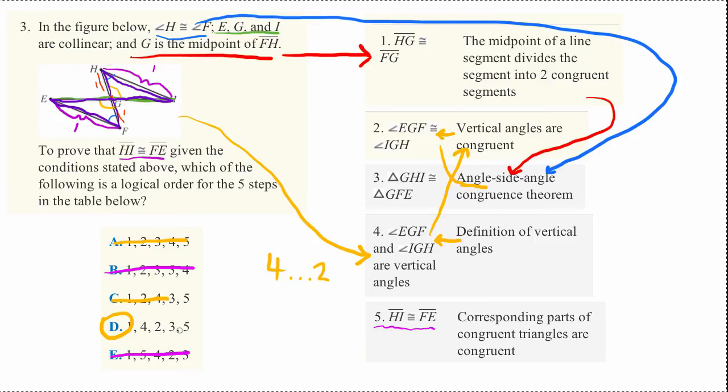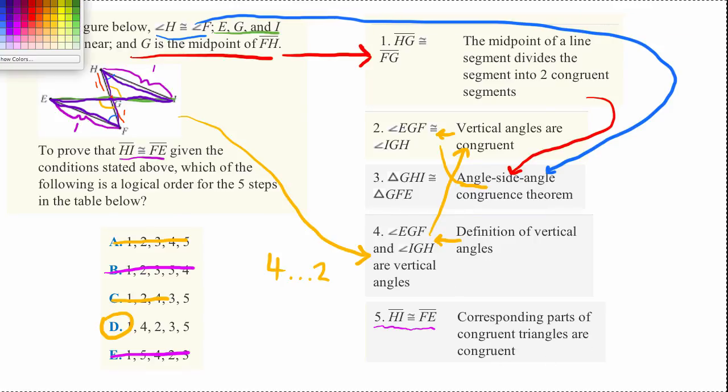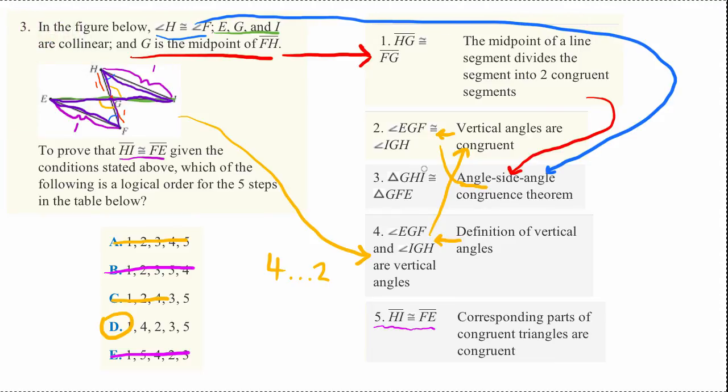And then finally, we get to step five. And this says that corresponding parts of congruent triangles are congruent. Well, we just proved in this last step that these two whole triangles were congruent.